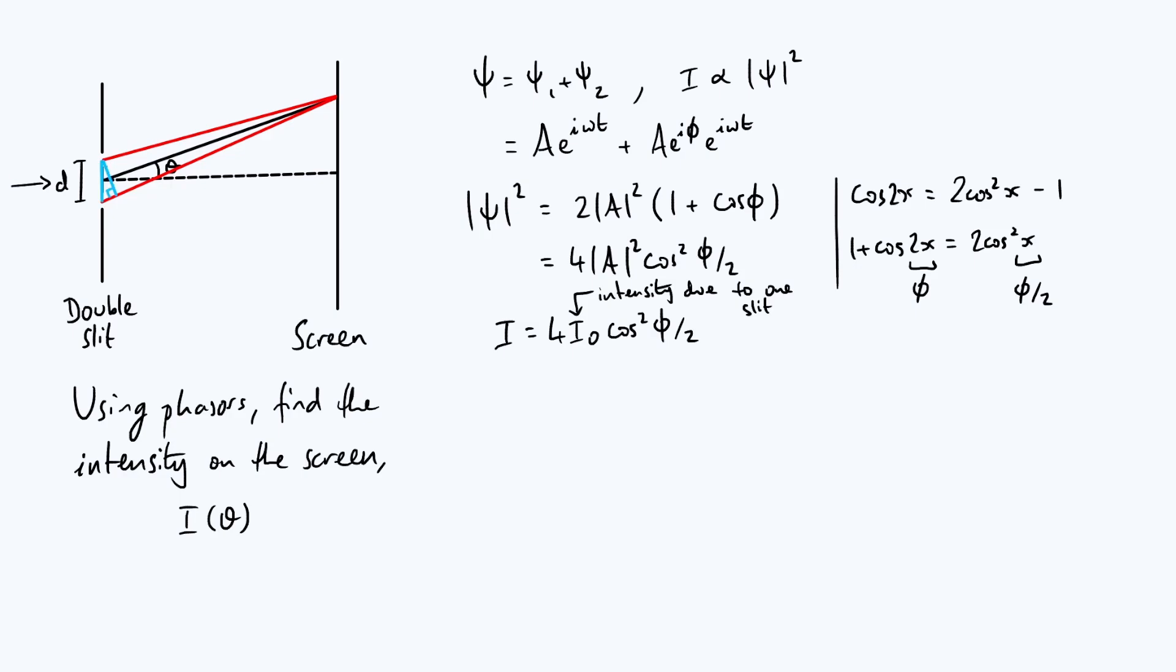But to figure that out, I've just added a couple of lines onto my original diagram here and made a little blue triangle. And the reason that's useful is that you can see that the bottom length of that triangle is the extra distance that the ray at the bottom travels compared with the ray at the top. So I'm going to label that PD for path difference.